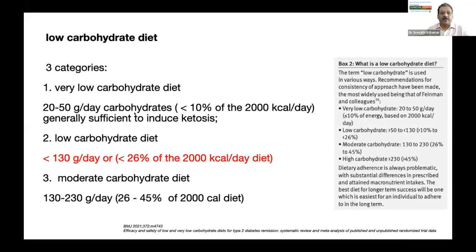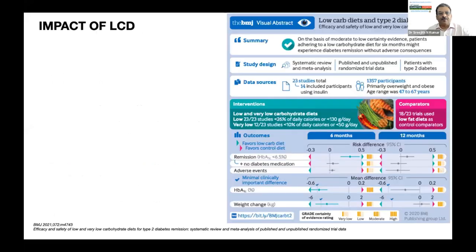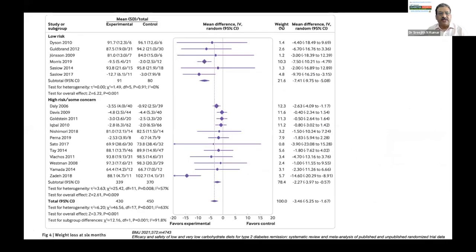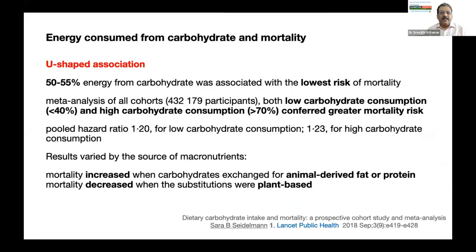A low carbohydrate diet can be classified as very low carb — typically 20 to 50 grams of carbohydrate per day — or an ordinary low carbohydrate diet allowing up to 130 grams, or a moderate carbohydrate diet of 130 to 230 grams per day. Any of these methods of low carbohydrate intake brings down HbA1c and brings down weight. Multiple meta-analyses and many studies have reported this benefit.